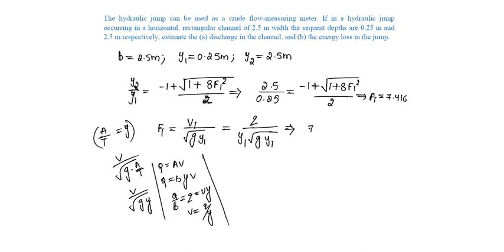F1 is 7.416, which will be equal to q by y1 is 0.25 into root of g is 9.81 into y1 is 0.25, from which q will be equal to 2.9035 meter cube per second per meter width.